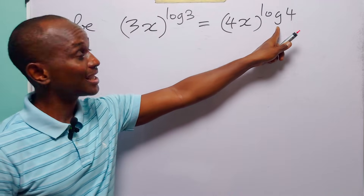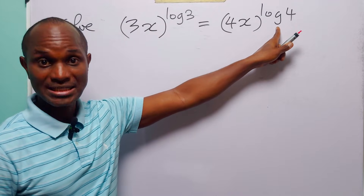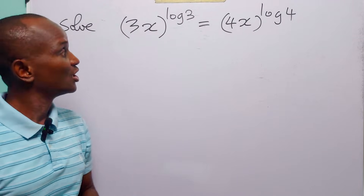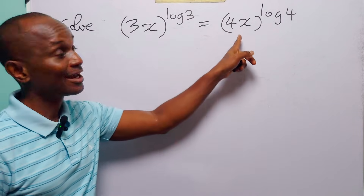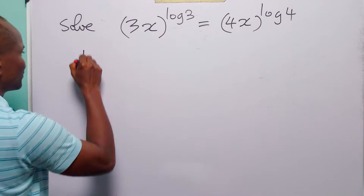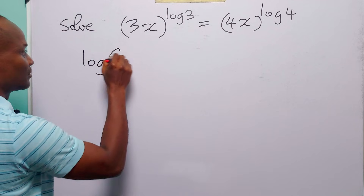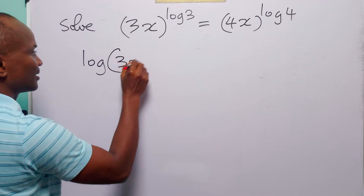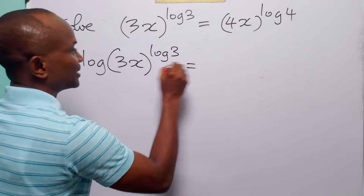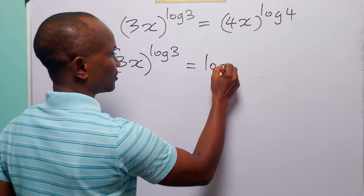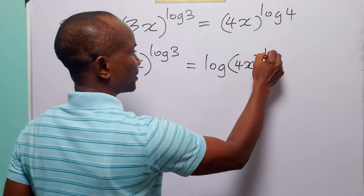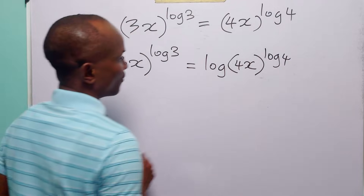When we write log without specifying the base, it means we are working with base 10 common logarithms. So when we take log to base 10 of both sides of this equation, we have log of 3x to the power log 3, is equal to log of 4x to the power log 4.